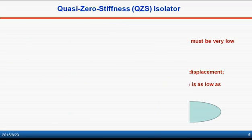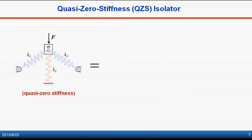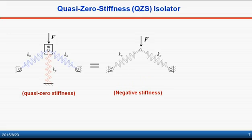Quasi-zero stiffness mechanisms are generally achieved by combining a negative stiffness element with a positive stiffness element in which the negative stiffness is achieved by two oblique springs.